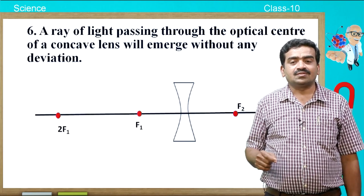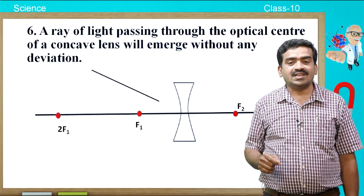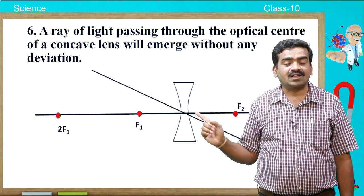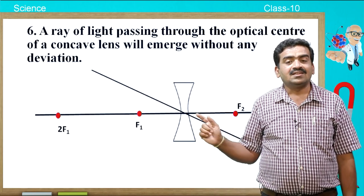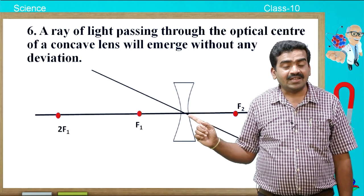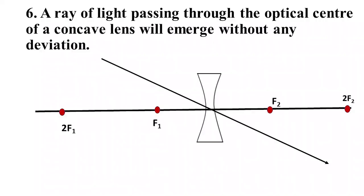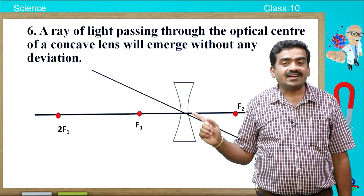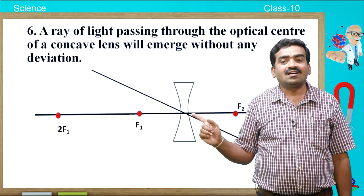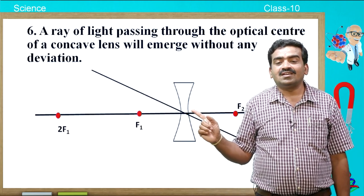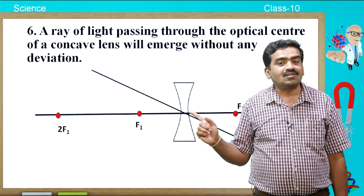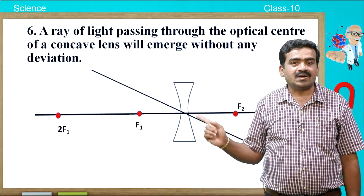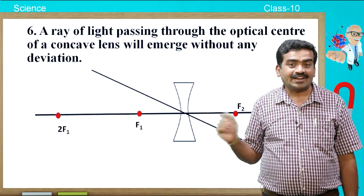In case of a concave lens, a ray of light passing through the optic center will also emerge without any deviation. Here also we can notice the same thing as in the case of the convex lens. In case of a concave lens also, if the ray of light passes through the optic center, it is not deviated, diverged, or refracted — it passes straight.